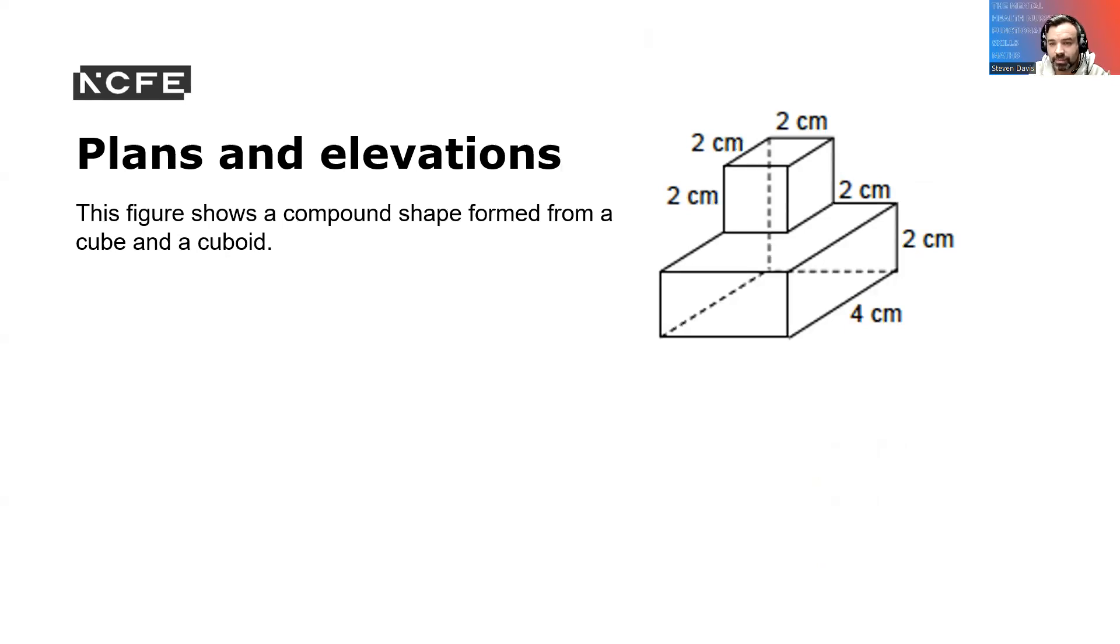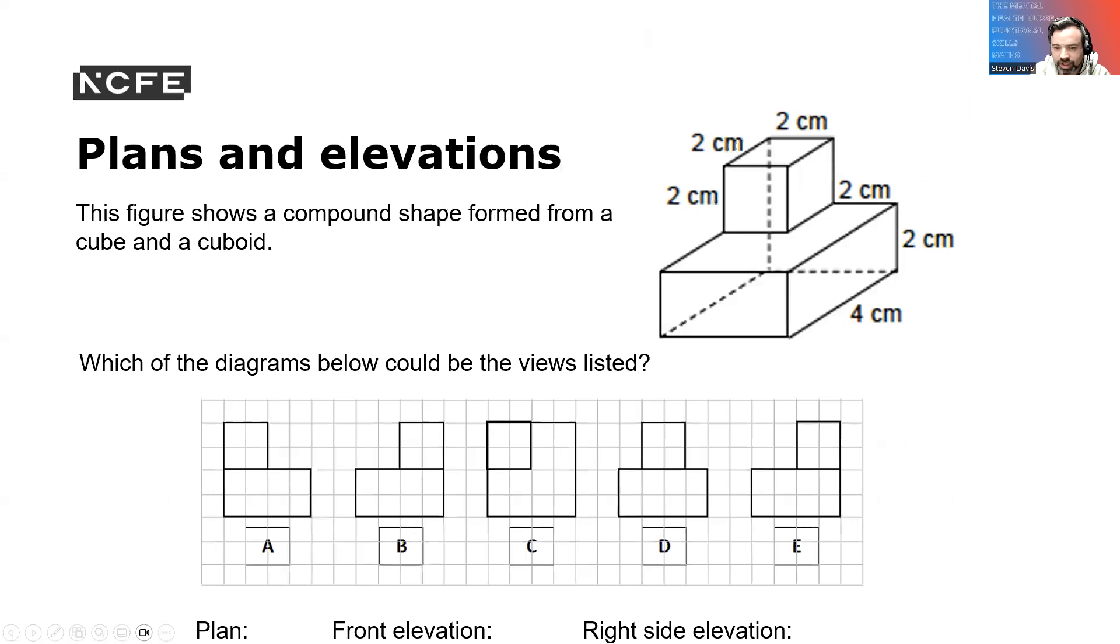Plans and elevations. These figures show compound shapes. So we've got two there. Looking at those, you've got the width, the height and all the other figures you need there. Which of the diagrams below could be the views listed? If we look at the plan, it'll be C. If we look at the front elevation, it's going to be A. And if we look at the right elevation, it's going to be E. Can you see how that works there, with that cube representing that there?